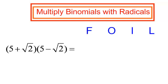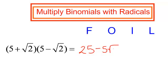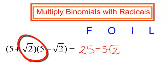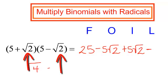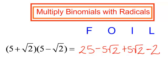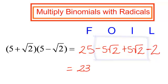I have 5 plus radical 2 times 5 minus radical 2. First term: 5 times 5 is 25. Outer terms: positive 5 times negative radical 2 will be negative 5 radical 2. Inner terms: positive 5 times radical 2. And the last term: a positive times a negative will be a negative, and radical 2 times radical 2 is radical 4, which is just 2. We do have some like terms: positive 25 and negative 2 gives 23, and negative 5 radical 2 plus positive 5 radical 2 — they cancel. We get just 23.